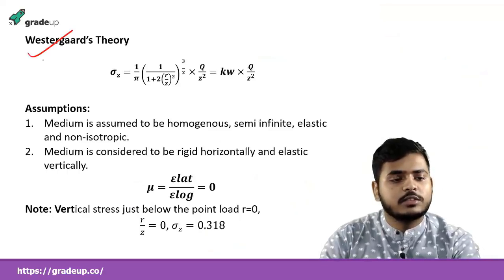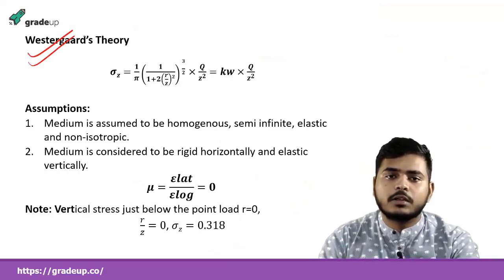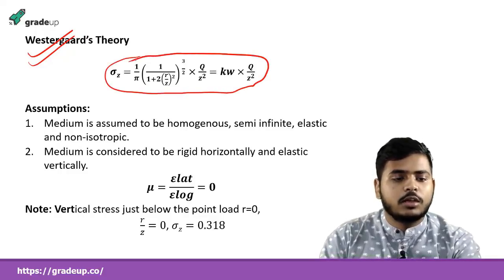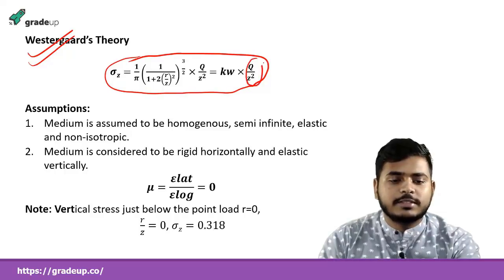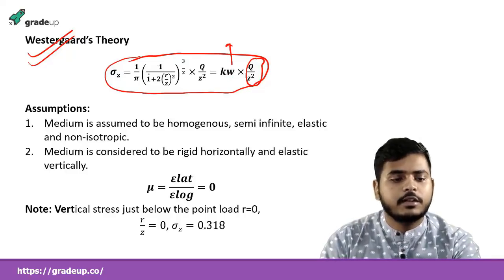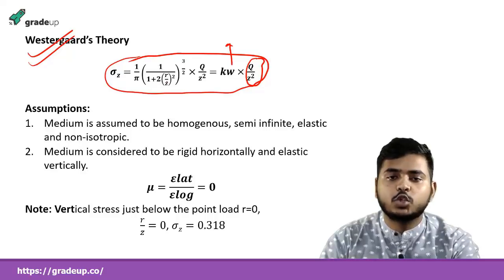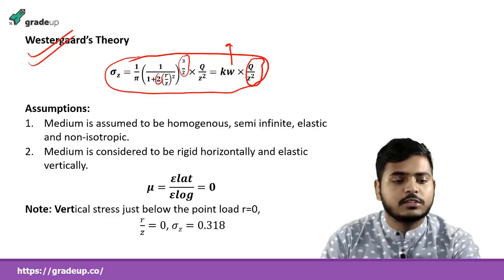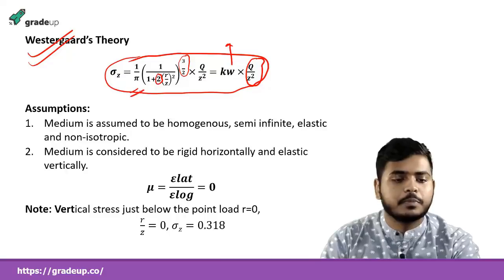Now taking the Westergaard theory: how it differs from Boussinesq. He gave σz = KW × (Q/Z²), where the coefficient KW = (1/π) × [1 / (1 + 2(R/Z)²)^(3/2)]. Note: the power is 3/2 instead of 5/2, there is an extra factor of 2 inside, and the leading constant is 1/π instead of 3/2π.